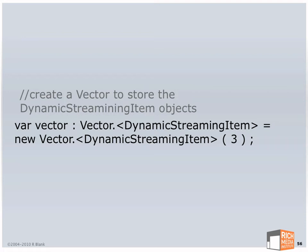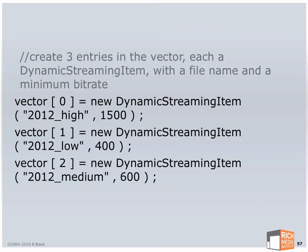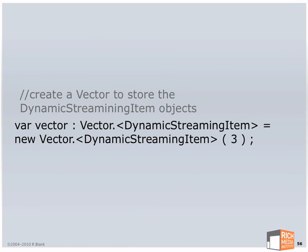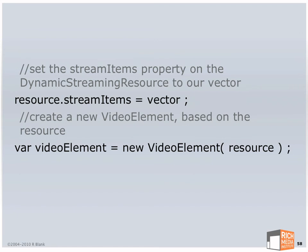If the syntax intimidates you, it shouldn't — it really is like working with arrays. It's just seeing chevrons on the left of the equal sign that throws people off. You create a vector of dynamic streaming items, and in this case I'm going to restrict it to three items. Vector zero is a new dynamic streaming item: I'll point it to a video file name and tell it to run at 1.5 megabits. Next slot: another dynamic streaming item pointing to the low video associated with 400 kilobits. And then the same thing with a medium video. I then tell that resource its stream items is that vector I just created.